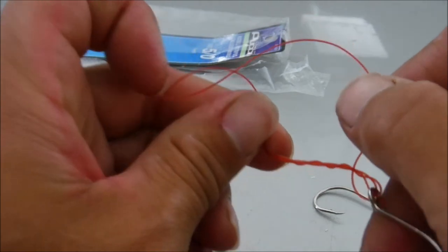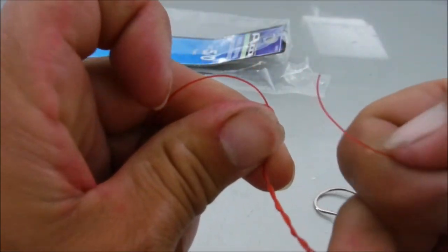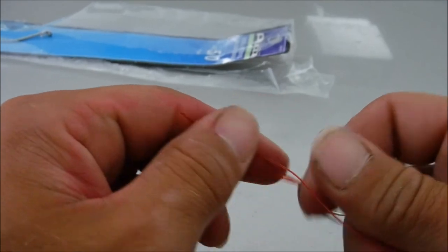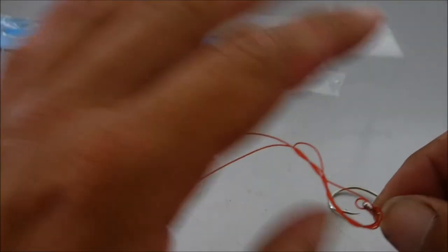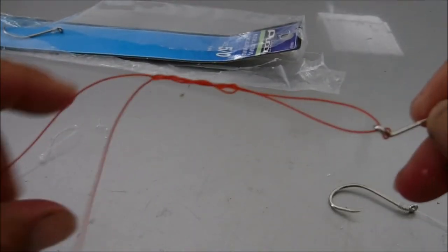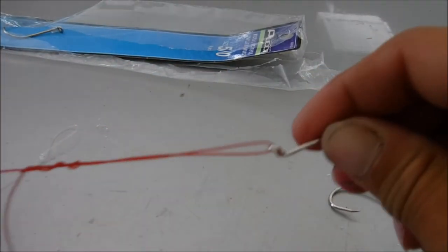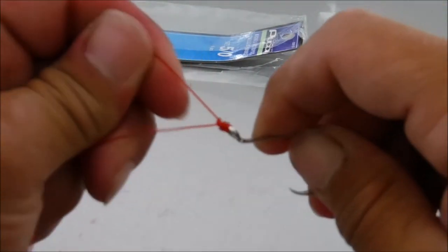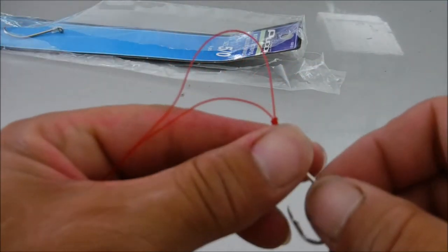Now we're going to run it through up here again, through our top loop. Pull our knot over everything. You see our knot is getting clenched up in there. We're going to clinch it down to the hook, pull our tag in, and clip our tag.